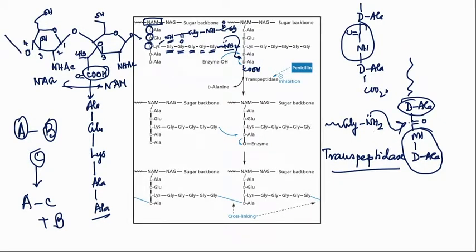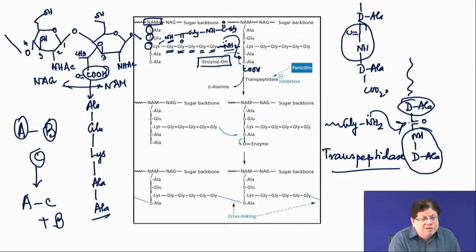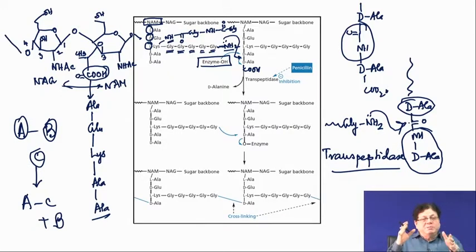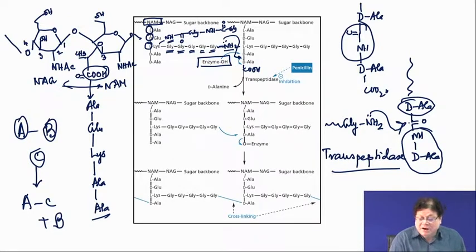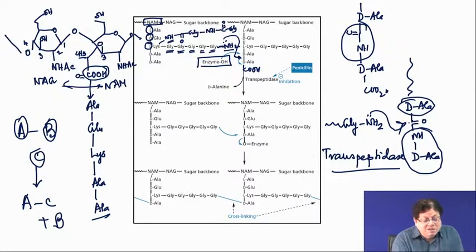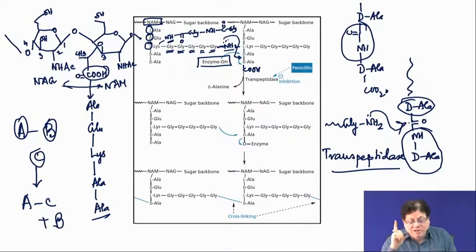The transpeptidase is a serine-based enzyme. The serine OH attacks the peptide carbonyl between the two D-alanines, forming a tetrahedral intermediate. The terminal D-alanine leaves as the acyl-enzyme intermediate forms. Then normally the adjacent glycine NH2 would attack to complete cross-linking. There must be a positively charged residue like lysine in the active site forming a salt bridge with the terminal carboxylate to anchor the substrate.